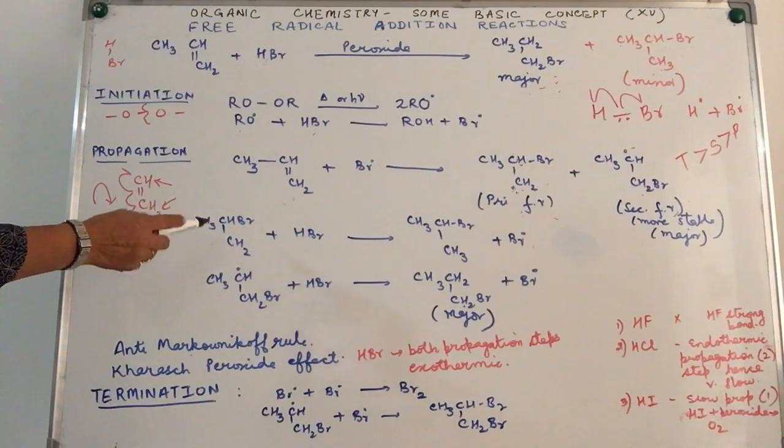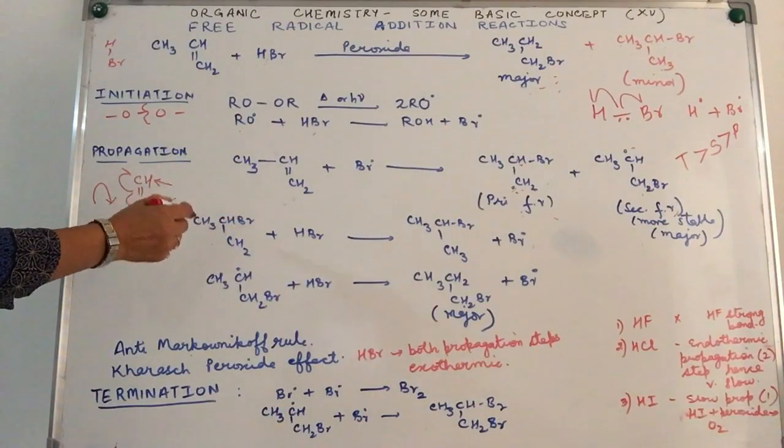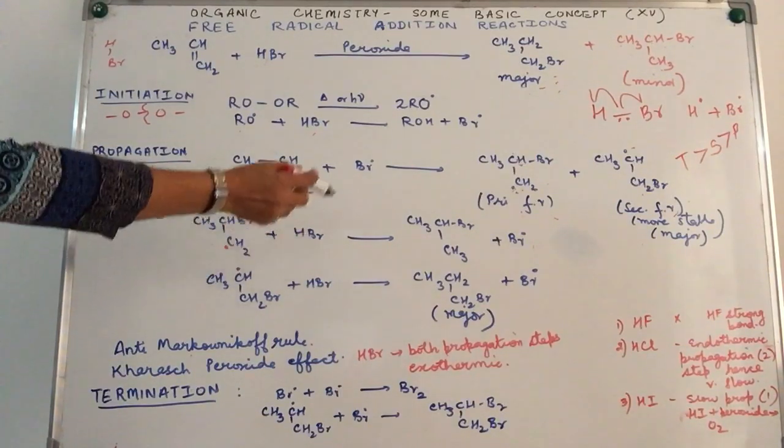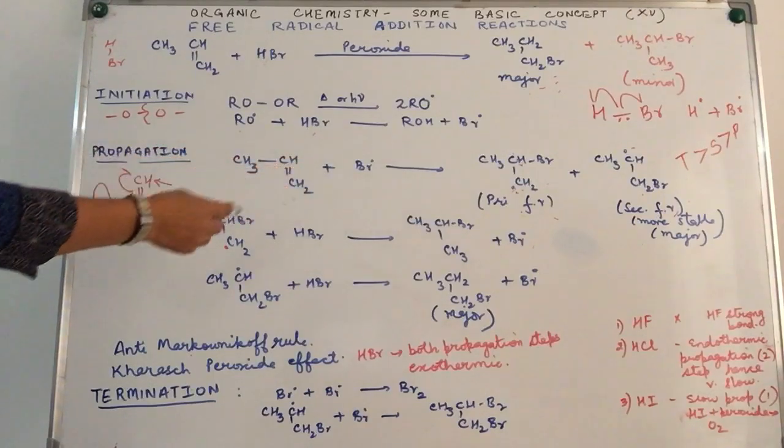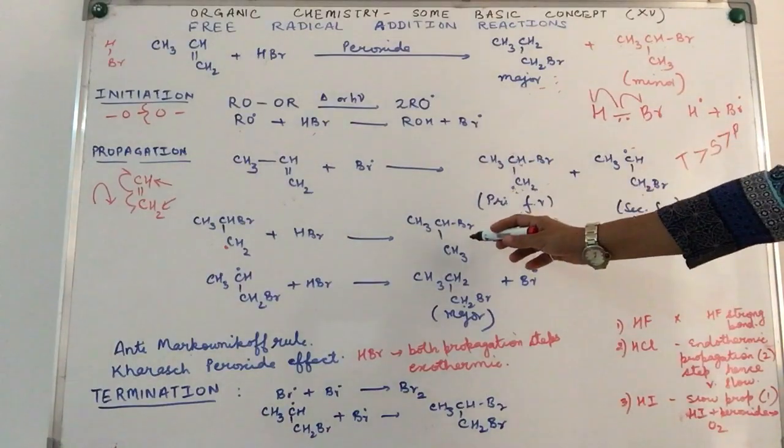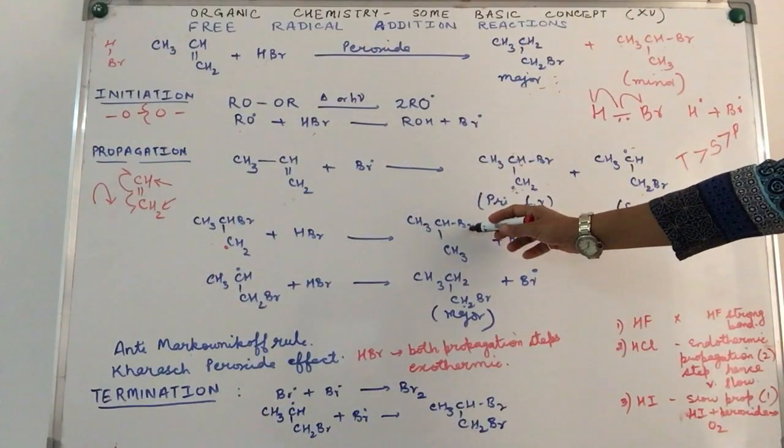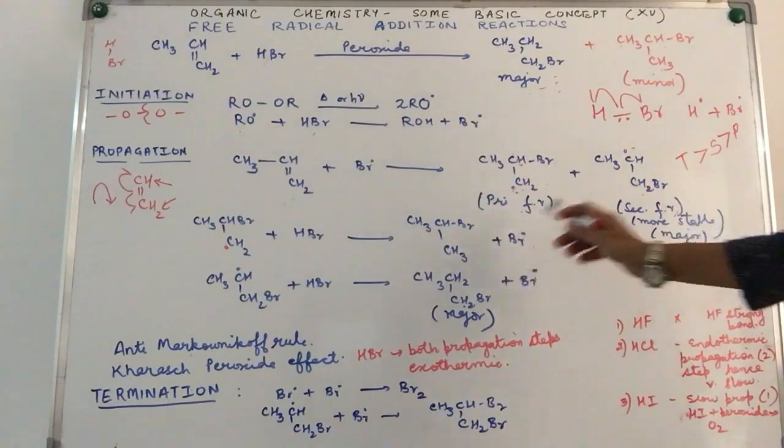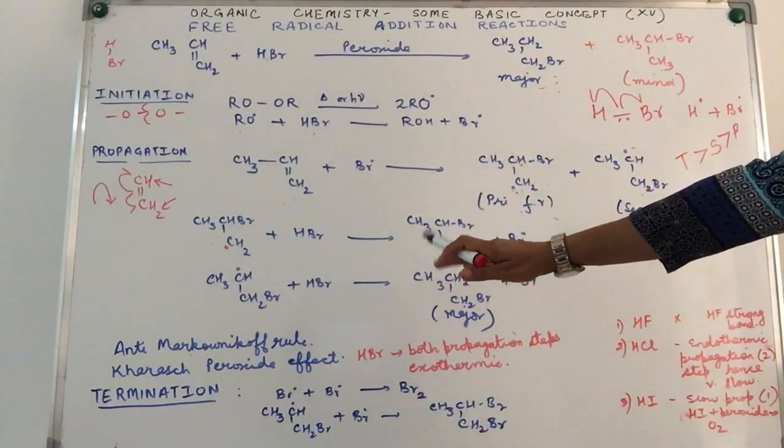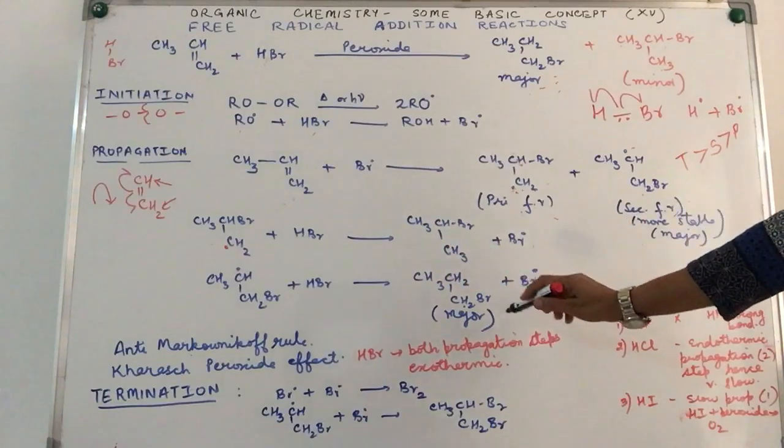Now again we take two possibilities here. We're talking about the secondary and the primary free radical undergoing attack with HBr, generating a bromide free radical. And in the process it is taking up the hydrogen from hydrogen bromide to give us 2-bromopropane.